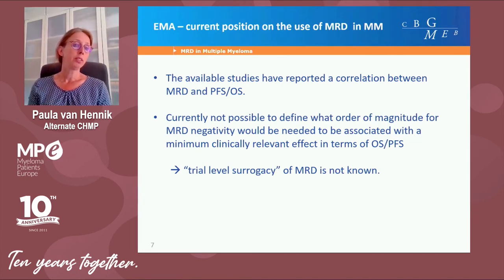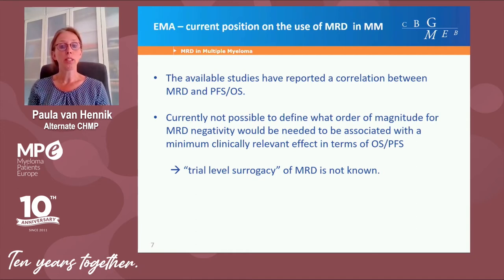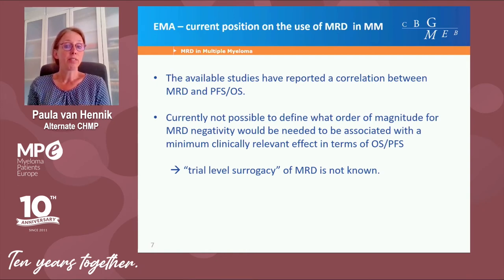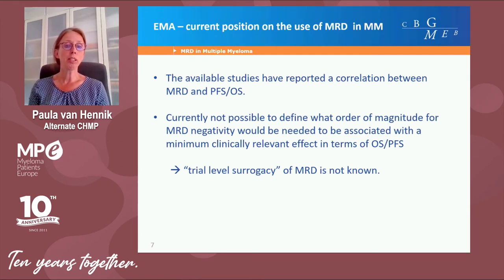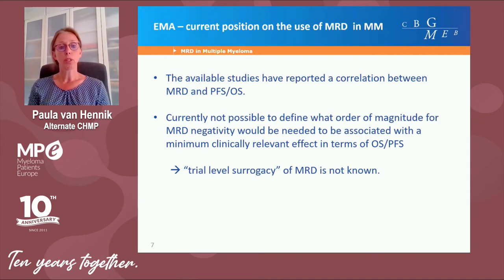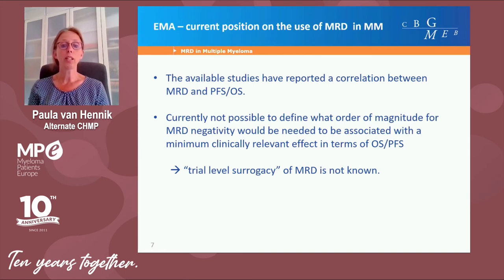The current position of European regulators is that available studies have reported a correlation between MRD and progression-free survival and overall survival — so we know it has predictive value; we call it patient-level surrogacy. However, it is currently not possible to define what order of magnitude of MRD negativity would be needed to be associated with a minimal clinically relevant effect in terms of overall survival and PFS. In other words, we do not know the quantitative relationship between MRD negativity and the clinical endpoints of OS and PFS — this is what we call trial-level surrogacy, which is not established.